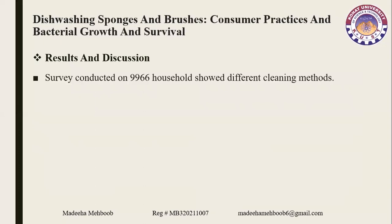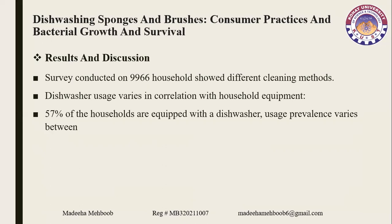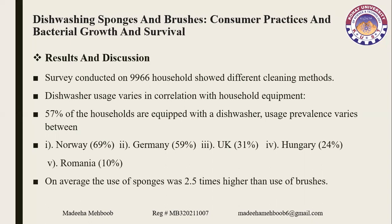Results and Discussion: The survey was conducted on 9,966 households and showed different cleaning methods. Dishwasher usage varied in correlation with household equipment. 57% of households are equipped with a dishwasher. Usage prevalence varies between Norway at 69%, Germany at 59%, UK at 31%, Hungary at 24%, and Romania at 10%. On average, the use of sponges was 2.5 times higher than the use of brushes.